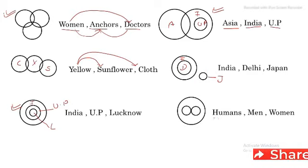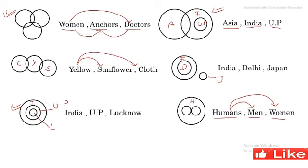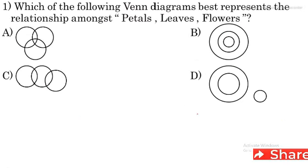Let us see the next Venn diagram — human, men and women. There are humans; men bhi hai aur humans hi women hote hai. But men and women are different parts. So this big circle is human and these two small circles inside it are men and women. Is type ke hi Venn diagrams aapse puche jate hai. Let us do the questions.